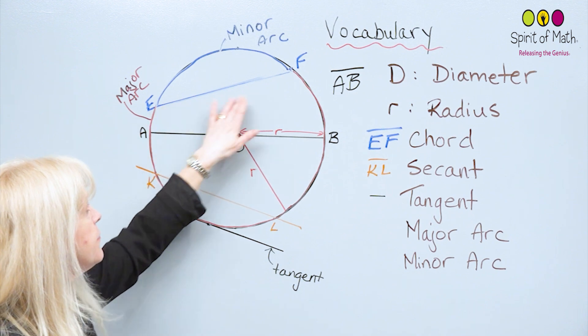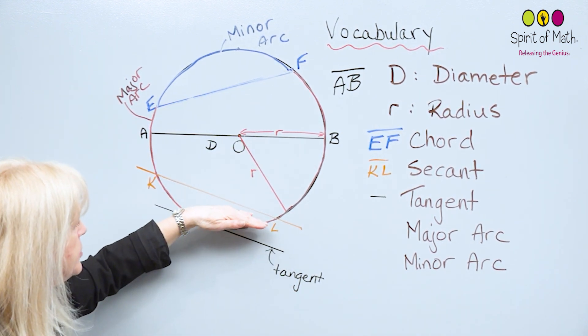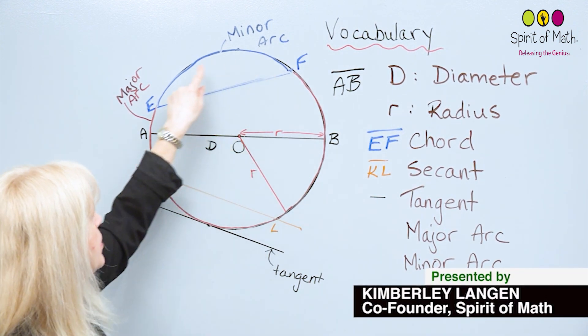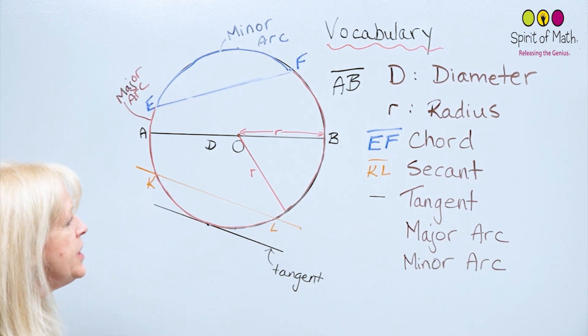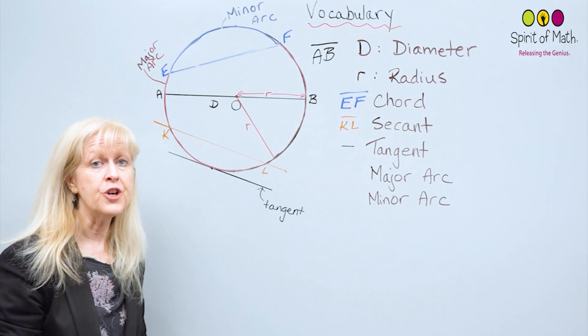And they are always from this chord. You can also make another major arc and a minor arc from this KL, where the major arc this time would be around here, and the minor arc would be this little part. All right, so those are all the definitions you need to know to do the circle geometry.